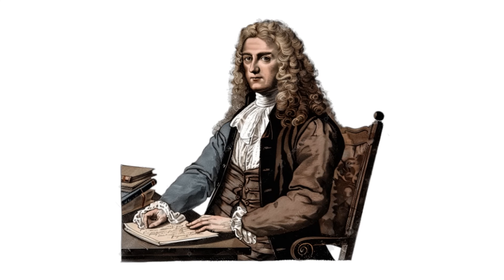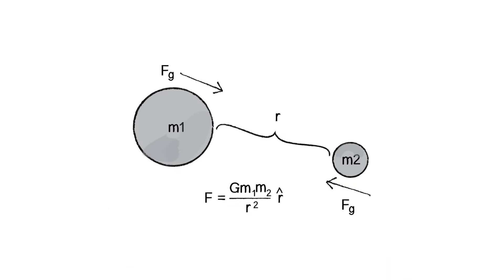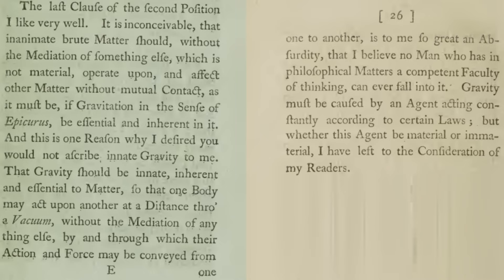In his correspondence with Richard Bentley in 1692, Newton expressed his discomfort with the idea that gravity could act at a distance instantaneously without a medium. That gravity should be innate, inherent, and essential to matter, so that one body may act upon another at a distance through a vacuum, without the mediation of anything else, by and through which their action and force may be conveyed from one to another, is to me so great an absurdity that I believe no man who has in philosophical matters a competent faculty of thinking can ever fall into it.